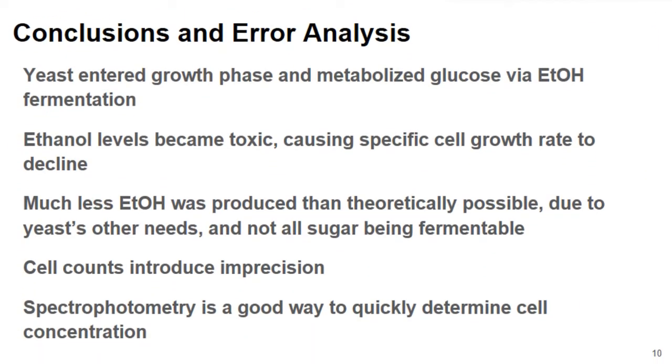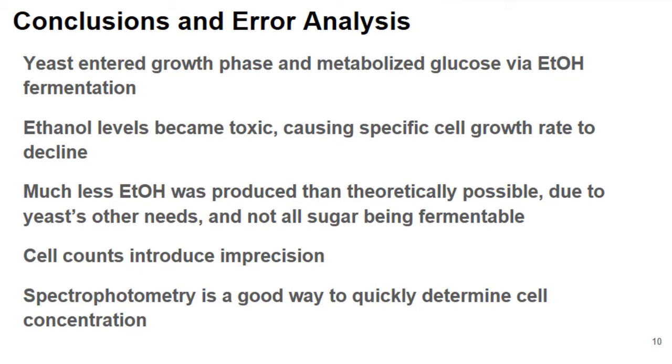To wrap up this presentation, what we found was that our yeast did in fact enter the growth phase and metabolize glucose via ethanol fermentation. When we put them in a flask that had an absence of oxygen, ethanol levels became toxic because the yeast were producing ethanol as a consequence of ethanol fermentation. This became toxic and prevented the cells from being as metabolically active as they otherwise would be.